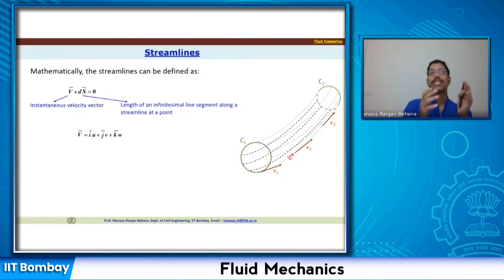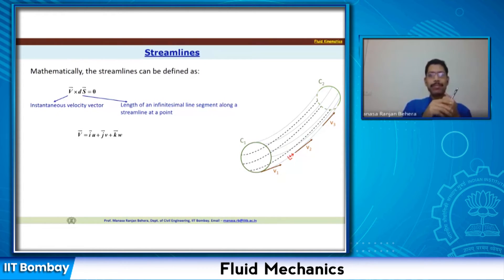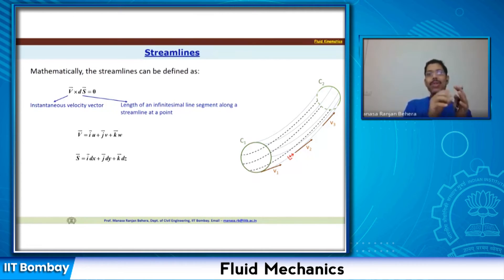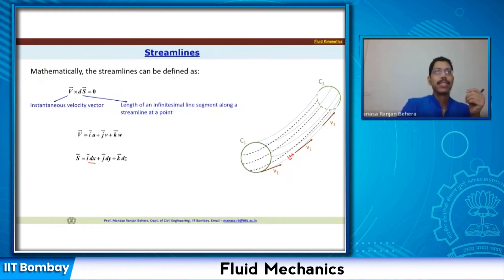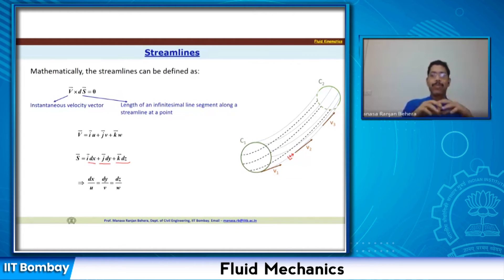Writing in vector form, the velocity has components u, v, and w in the x, y, and z directions respectively, so V = i·u + j·v + k·w, where i, j, k are unit vectors. Similarly, ds has components dx, dy, dz, written as ds = i·dx + j·dy + k·dz. Taking the cross product gives: dx/u = dy/v = dz/w.